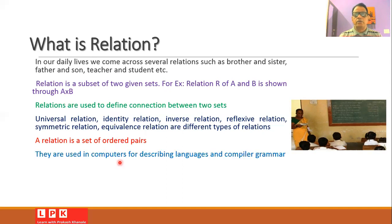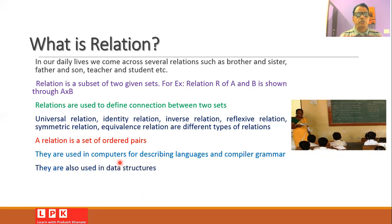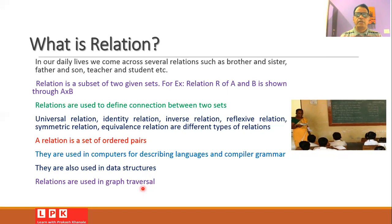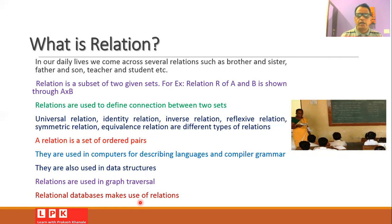Relations are useful in computers because whenever we describe computer languages or compiler grammar, we can make use of relations. Also in data structures, relations are used — for example, whenever we want to perform graph traversal, that is, visit each and every element of the graph, relations can be used. Relations are also used in databases to describe relational databases.